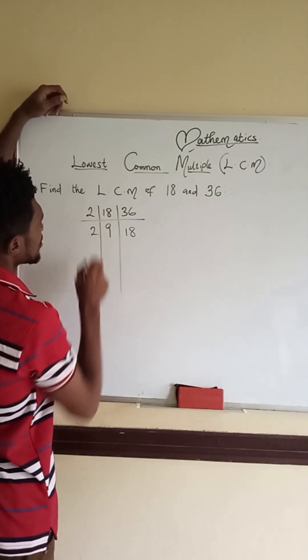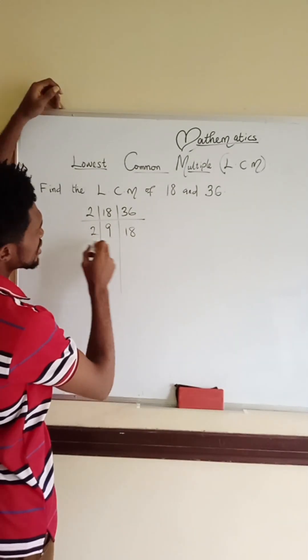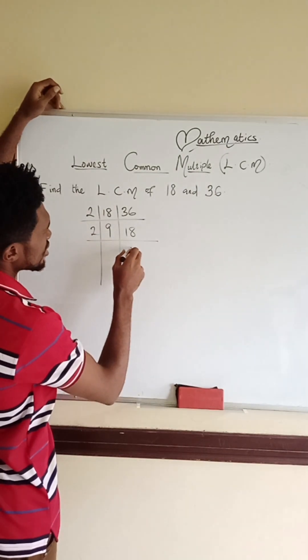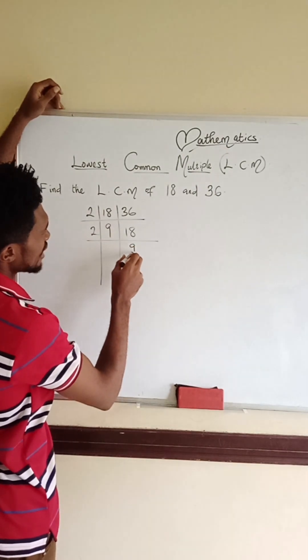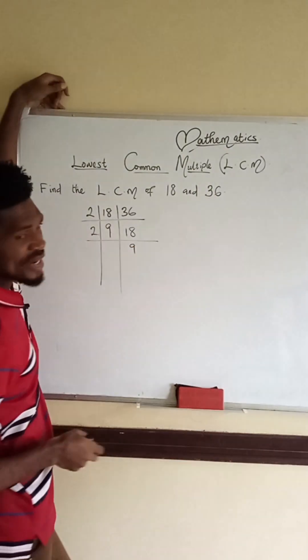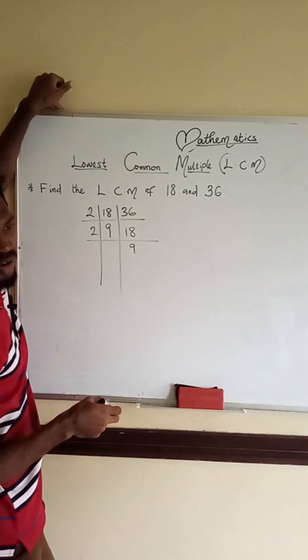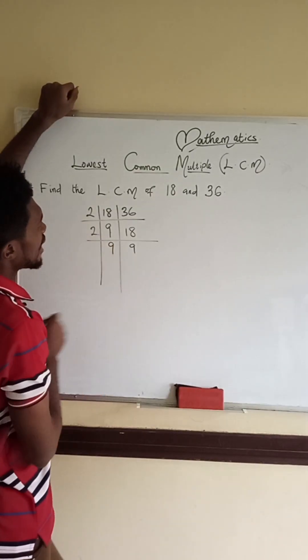So here, 2 can still go, because this one ends with 8 as well. It's an even number. So 2 can go in 18, 9 times. 2 cannot go in 9. That's why 9 is an odd number, so we break it down.